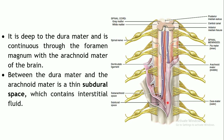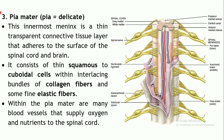The space between the dura mater and the arachnoid mater is known as the subdural space, and it is filled with interstitial fluid. The third layer — the innermost — is the pia mater. 'Pia' means delicate. This layer is a thin, transparent layer of connective tissue which adheres to the surface of the spinal cord and the brain, mainly composed of squamous to cuboidal cells. Collagen and elastic fibers are also present, and blood vessels supply oxygen and nutrients to the spinal cord.